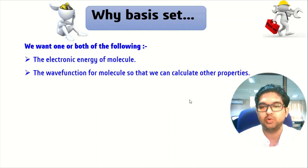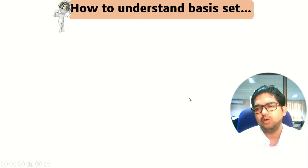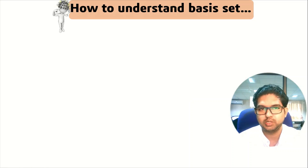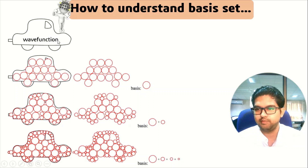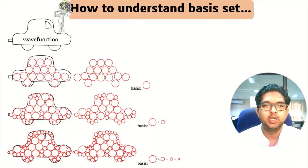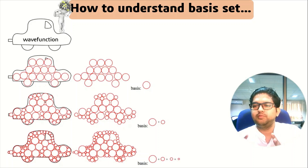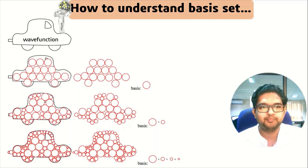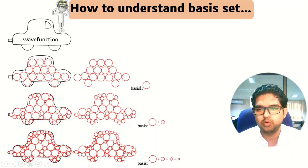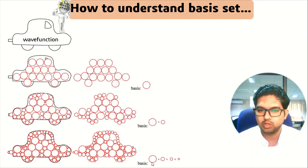To understand what a basis set is, just assume this car is a wave function — it gives you the atomic orbitals. Now this wave function is itself a linear combination of different basis functions, which gives you the basis set. Assume these small circular balls are the basis functions. In the second case we have a bigger ball and a smaller ball, and in the third case there is a smaller ball added as well.